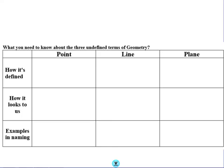So, we are going to talk today about the three undefined terms of geometry. The first undefined term is a point, and we're going to look at how we define it, how it looks to us, and examples in how we name it. So, what is a point? A point is an exact location in space that has no dimension whatsoever.